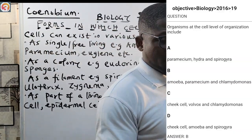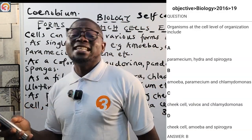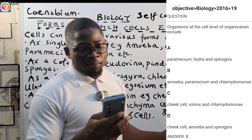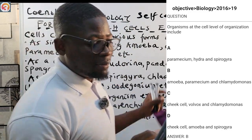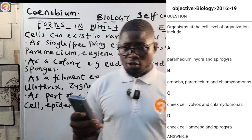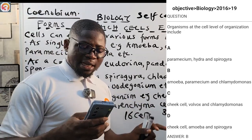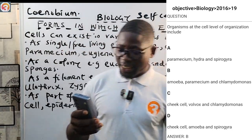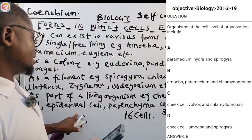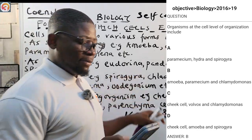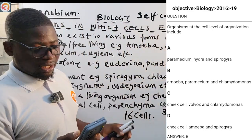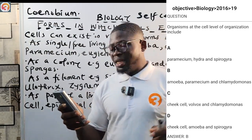Question 4 (2016, No. 19): Which organisms are at the same level of organization — the unicellular/cell level? A — Paramecium, Hydra, and Spirogyra: Hydra and Spirogyra are not unicellular, so wrong. B — Amoeba, Paramecium, and Chlamydomonas: all unicellular — correct. C — Chick cell, Volvox, and Chlamydomonas: chick cell is part of a living organism, Volvox is colonial — wrong. D — Chick cell, Amoeba, and Spirogyra: also wrong. The correct answer is B.